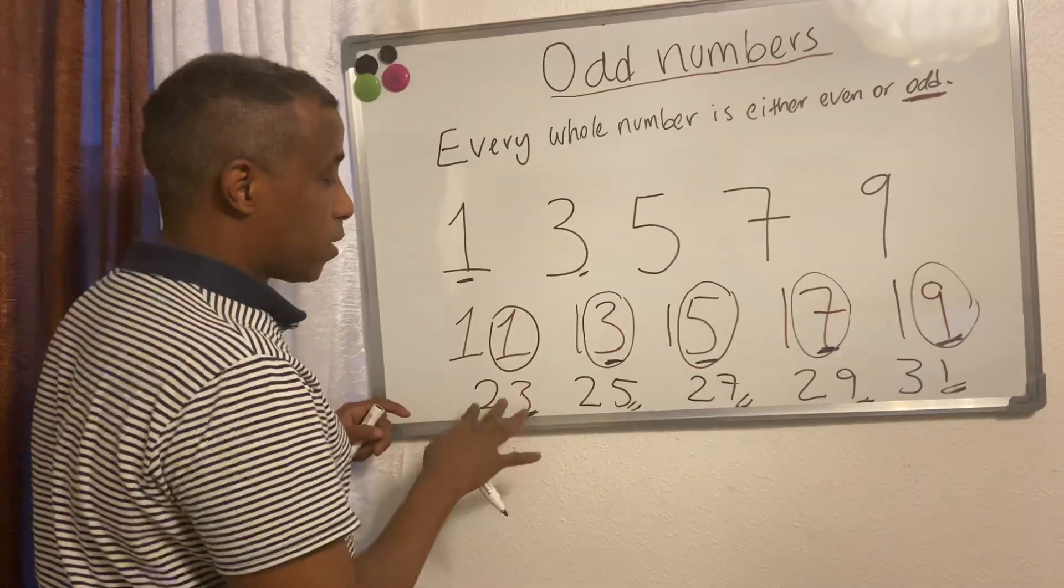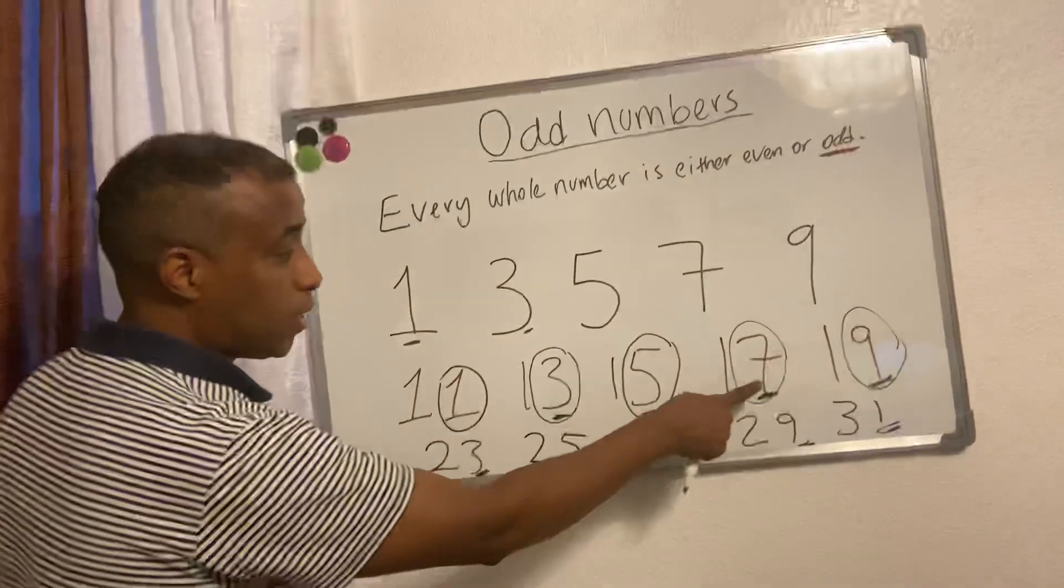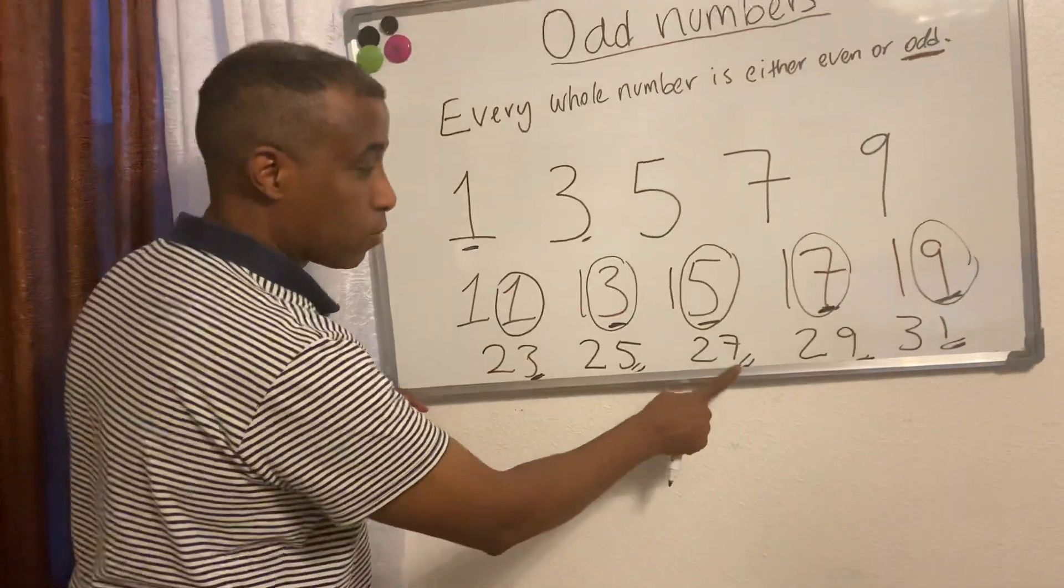it's odd or even when they join another number like this: 11, 13, 15, 17, 19, 23, 25, 27, 29, 31. That's how you recognize odd numbers.